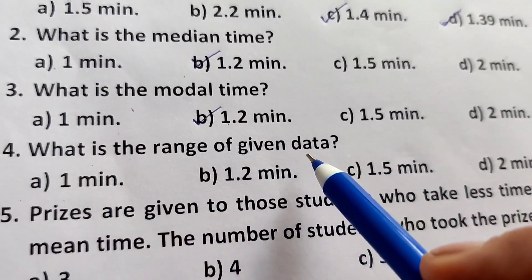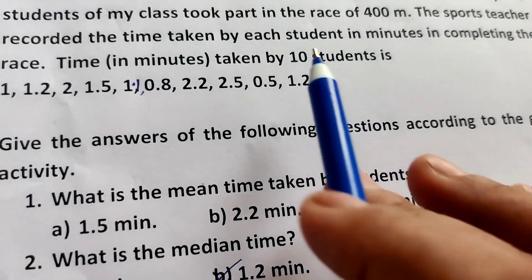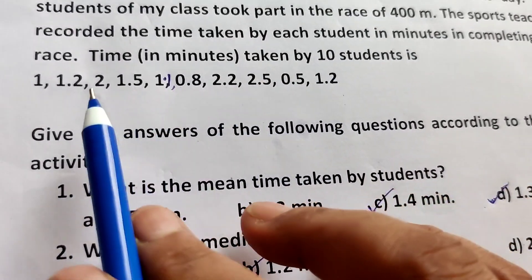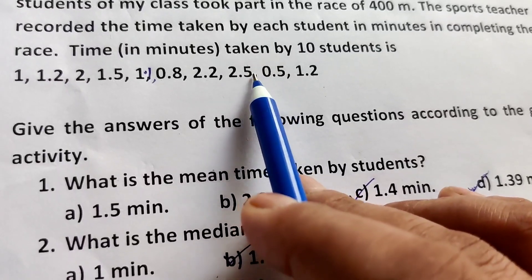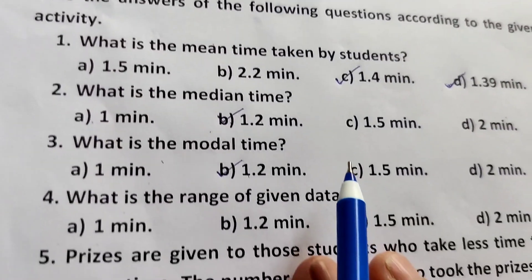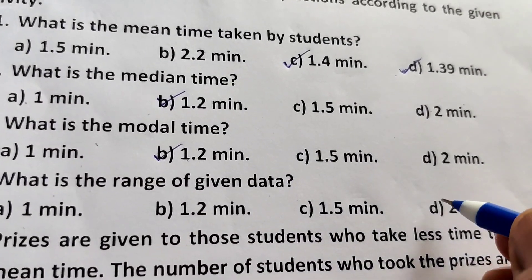Next, what is the range of the data? Range means highest time 2.5 and minimum time 0.5 minutes. The range is 2.5 minus 0.5, which equals 2 minutes.